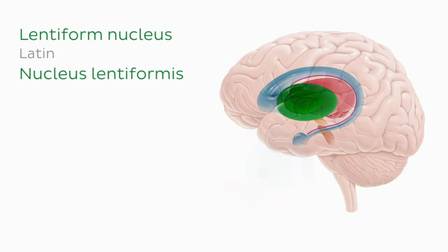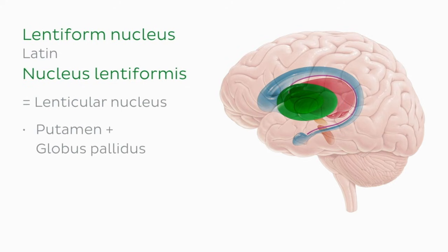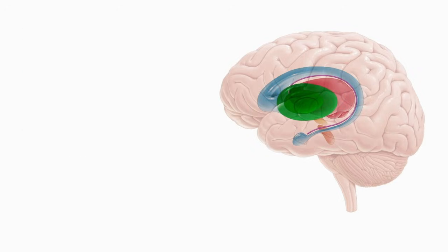We're looking at the lentiform nucleus, or lenticular nucleus, which is a term used to collectively refer to the putamen and the globus pallidus. Let's talk about each of them in more detail.